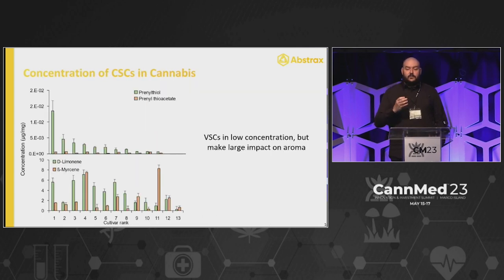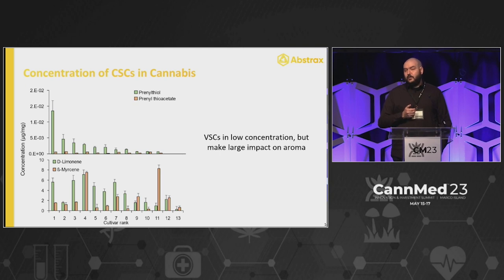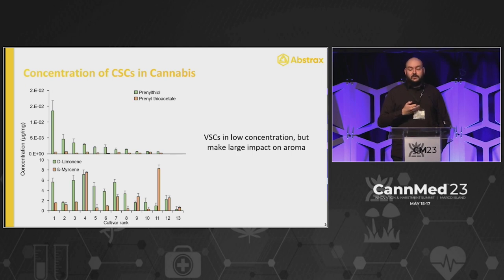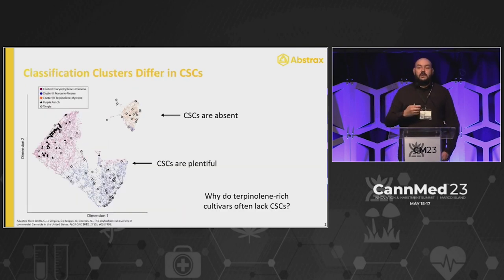Looking at direct trends, prenylthiol or prenylmercaptan changed the most with organoleptic scores — there's a much more linear trend. Prenylthiol acetate was more present when a sample was perceived as gassy and skunky, but completely absent when there was no gassy or skunky scent. We also looked at terpenes to see if there were any particular trends, and there really weren't — it was all over the board, which is what we expected going in.